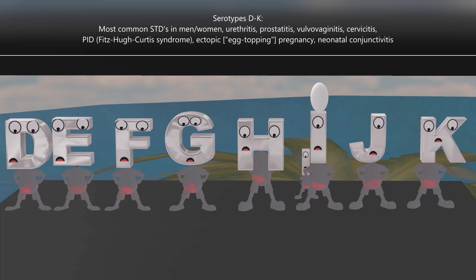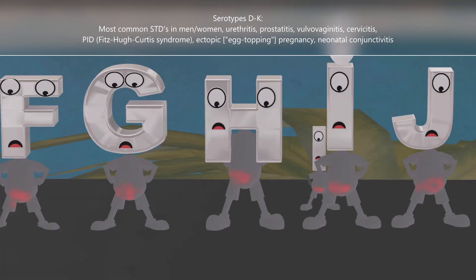Behind this mother over here we see a baby, placed here to remind us of neonatal conjunctivitis. If Chlamydia affects a pregnant female, there is a risk of the infection being passed to the baby during vaginal delivery, leading to neonatal conjunctivitis. We can imagine a little fire by this baby's eye for conjunctivitis.